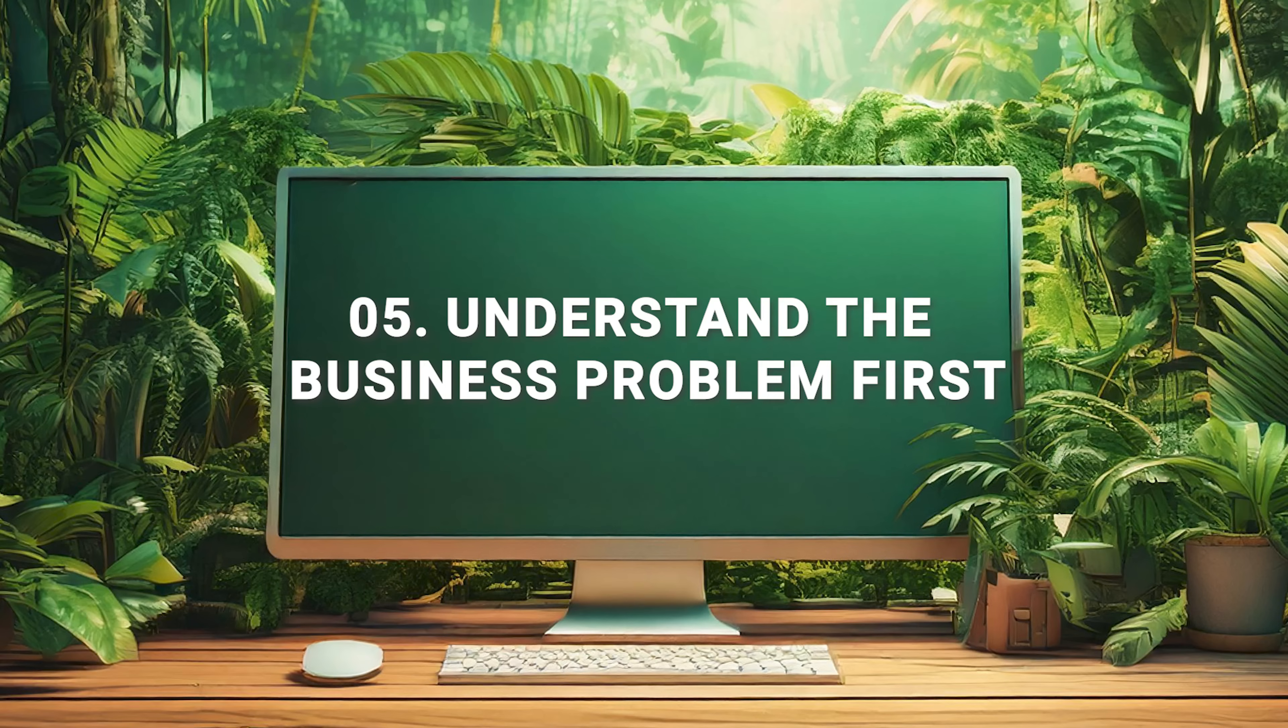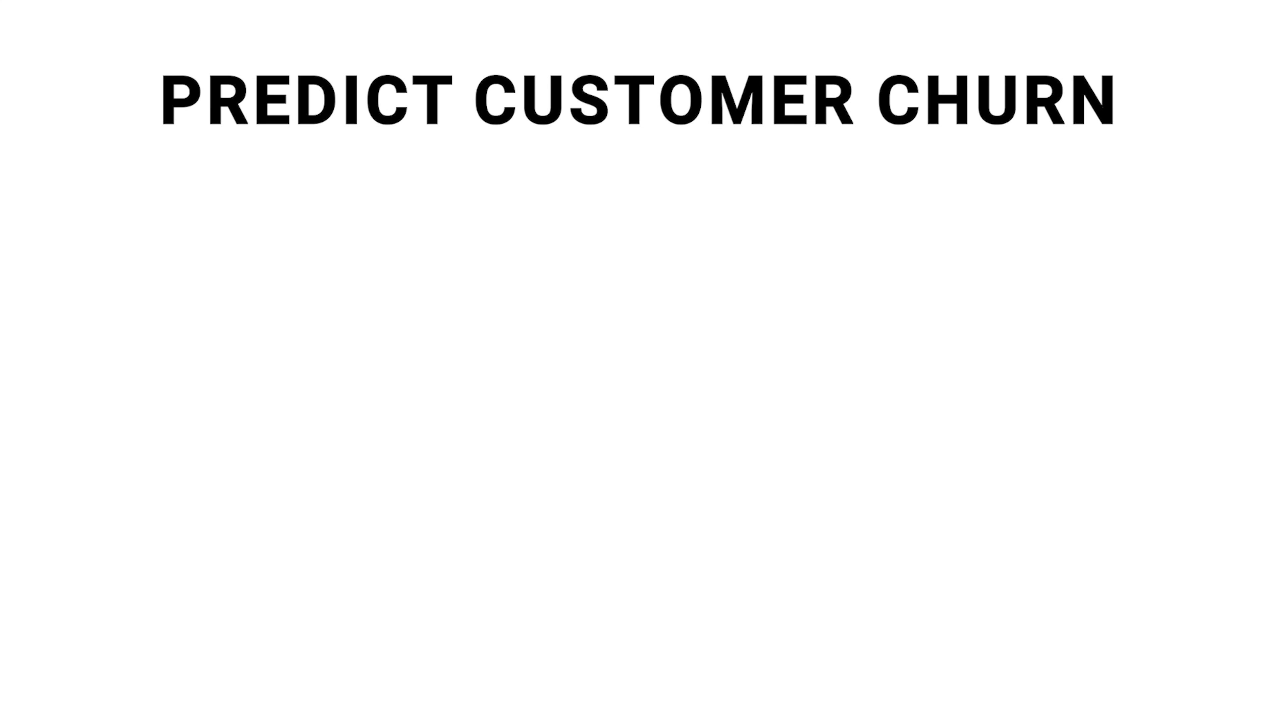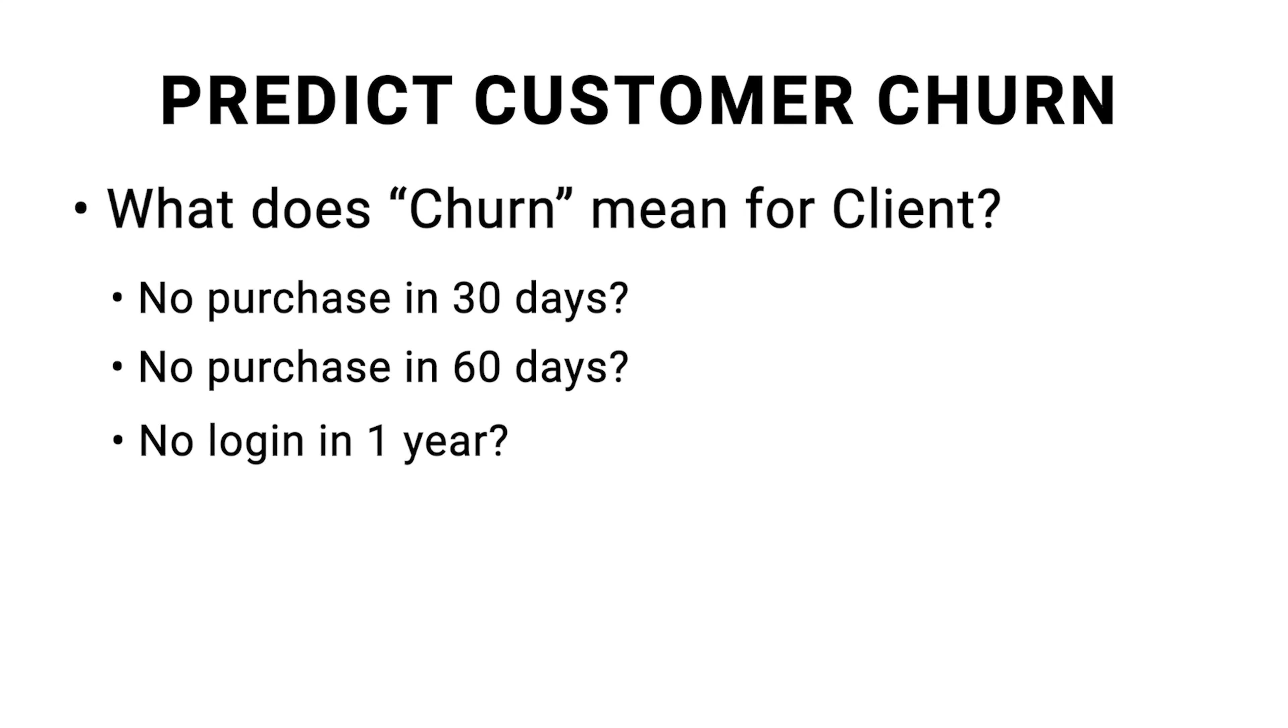Understand the business problem first. I think the key to getting a great data set and picking a fitting algorithm is truly understanding the business problem first. Truly think about what you're trying to do. For example, if you're tasked with building a machine learning model to predict customer churn, understanding the business problem helps you define what churn actually means for the company. Is it a customer who hasn't made a purchase in 30 days? 60 days? One who hasn't logged in in a year? Without this clarity, your model might optimize for the wrong target, leading to misaligned business outcomes and wasted resources.